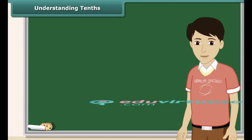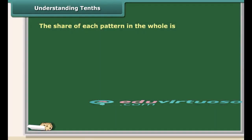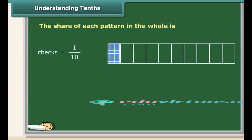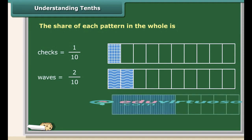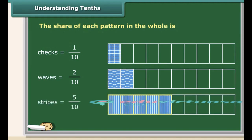Let us understand the concept of decimal using fractions with denominator 10. Consider the fraction bars. In the first bar, only 1 out of the 10 blocks has checks. In the second bar, only 2 out of the 10 blocks have waves. Similarly, in the third bar, 5 out of the 10 blocks have stripes.